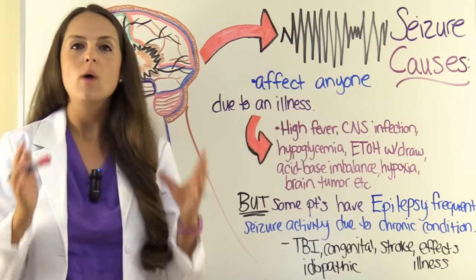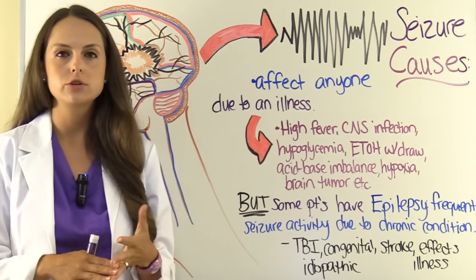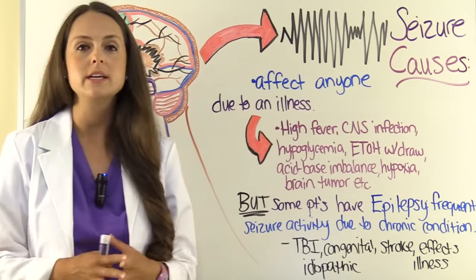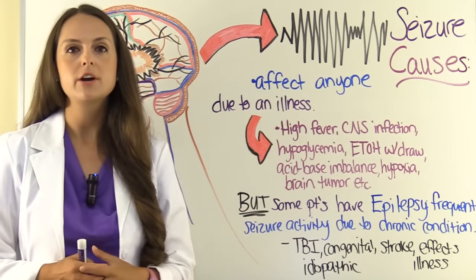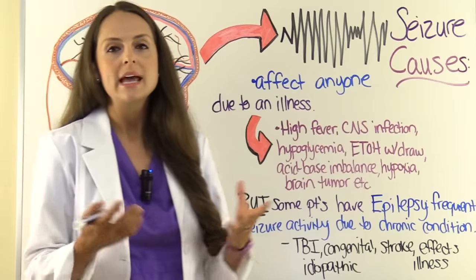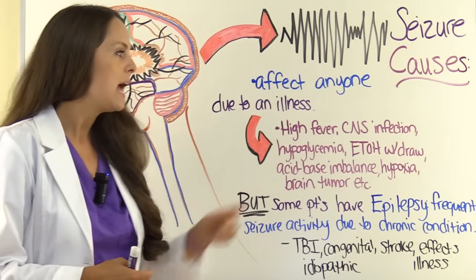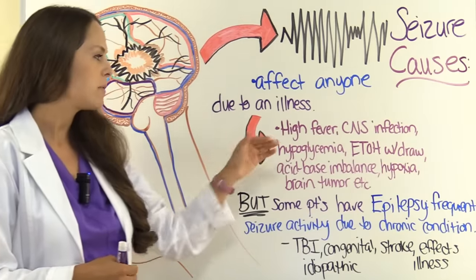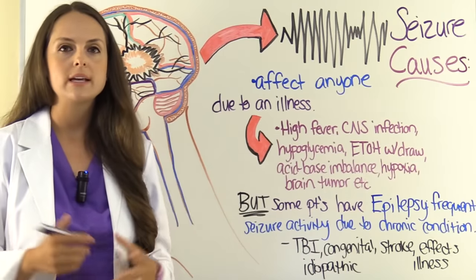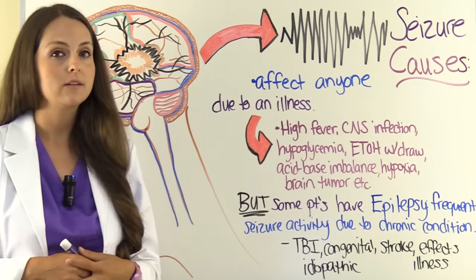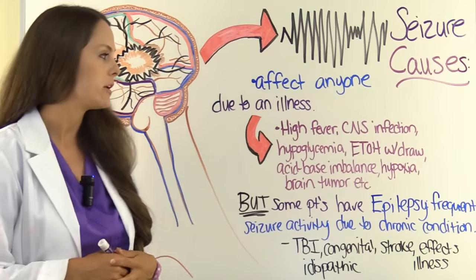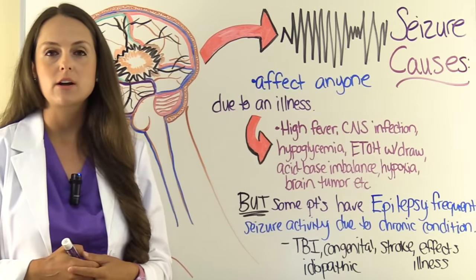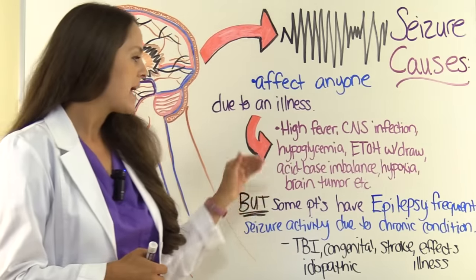What causes seizures? Anyone can have a seizure — adults or children — especially if suffering from a severe acute condition. Once corrected, seizures will stop. Causes include high fever, central nervous system infections like bacterial meningitis, hypoglycemia, alcohol withdrawal, acid-base imbalances like acidosis, conditions causing hypoxia, and brain tumors.